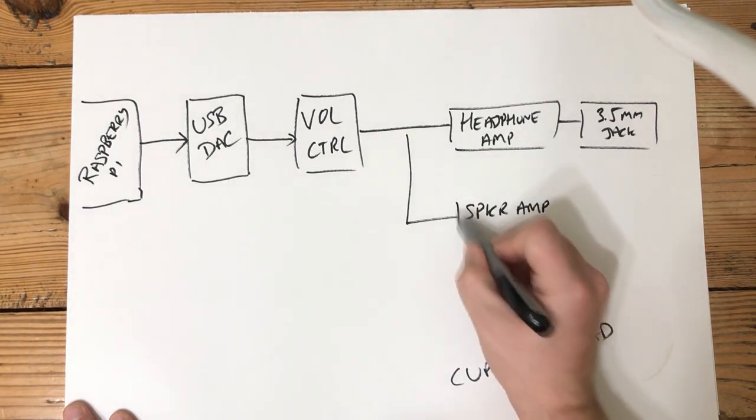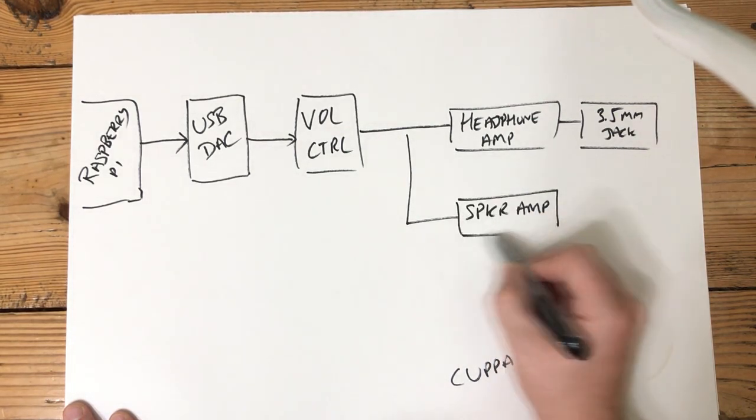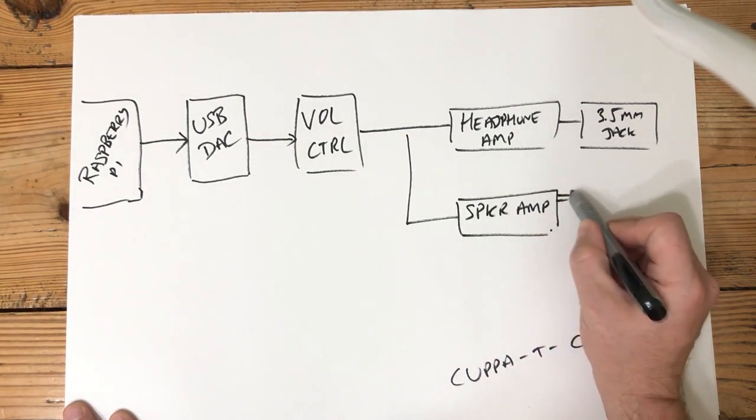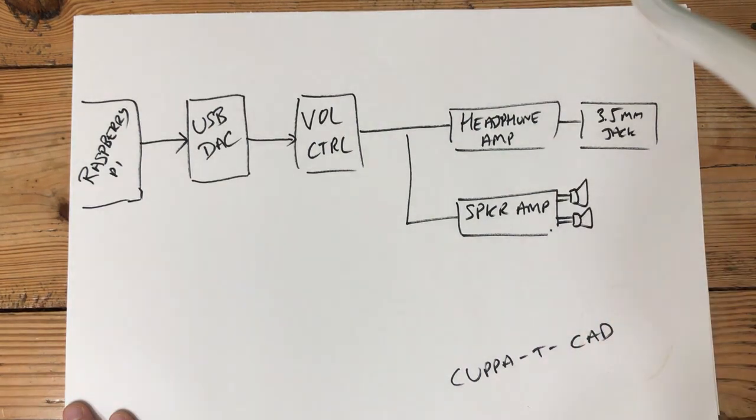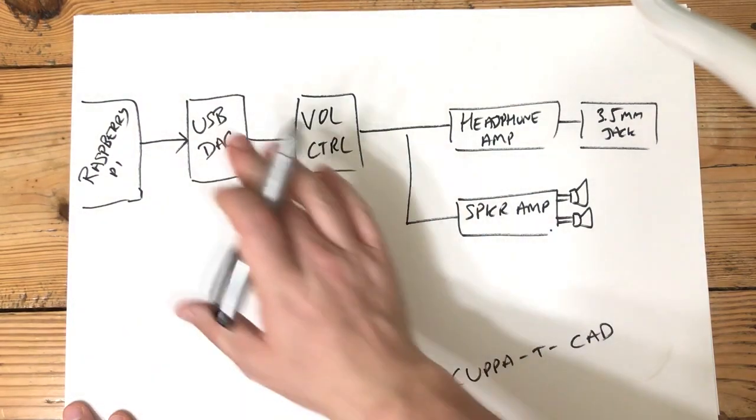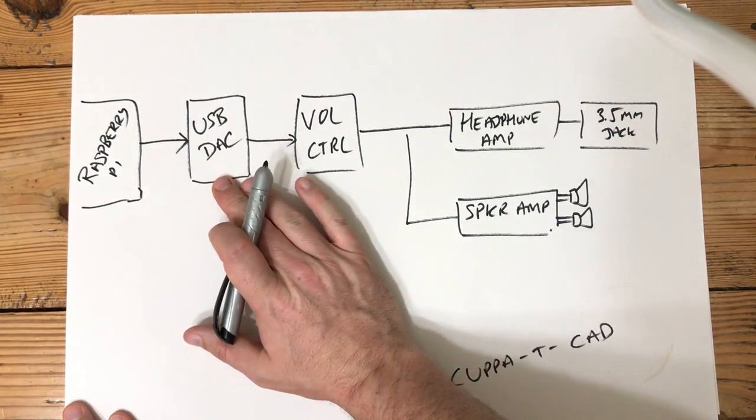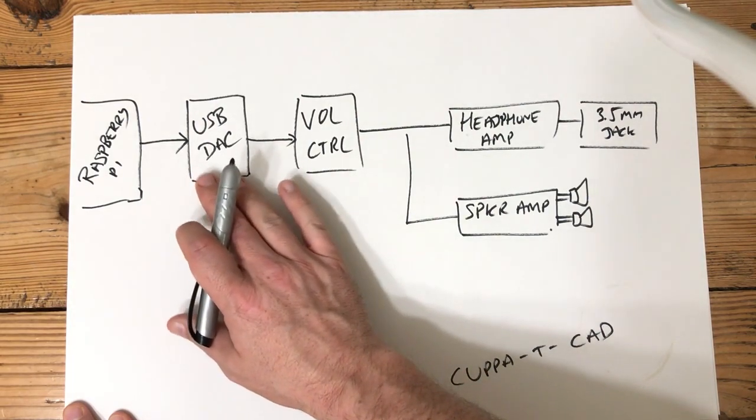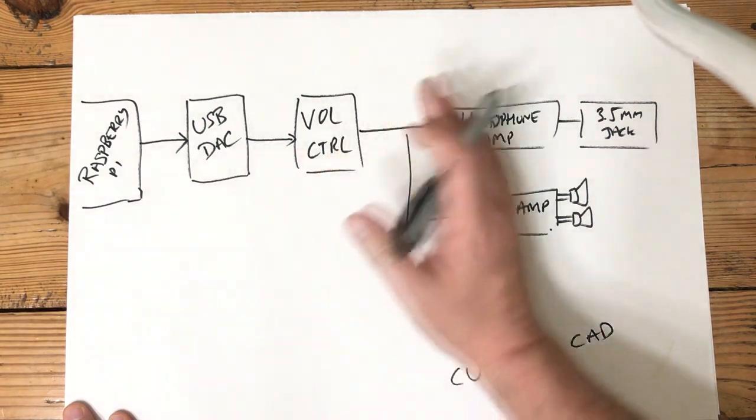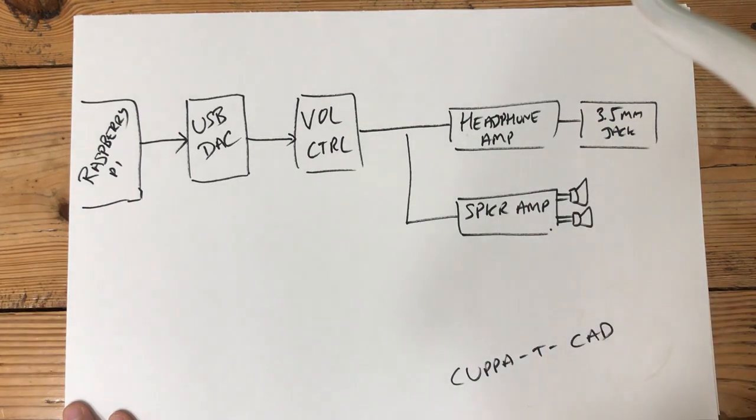And the amount of power we're talking about here is minuscule like 1, 2, 3 watts of power. Nothing really to write home about. I mean this is a small portable product, the last thing I want to do is deafen people. Convert to analog, cleanly, nicely. Do a little bit of volume control in it so I can take the maximum signal out and get the best signal to noise ratio and then drive that into my headphone amp and my speaker amp.